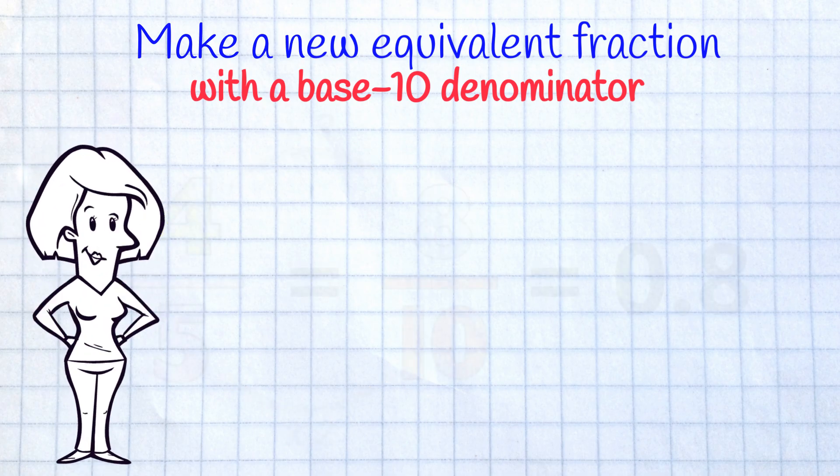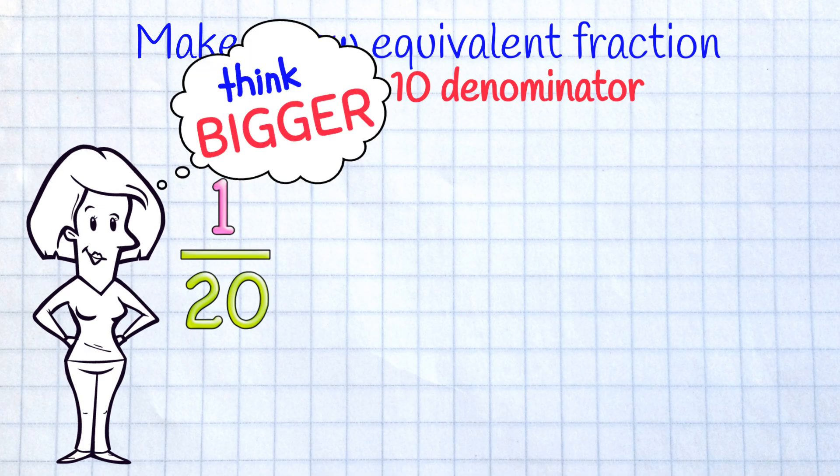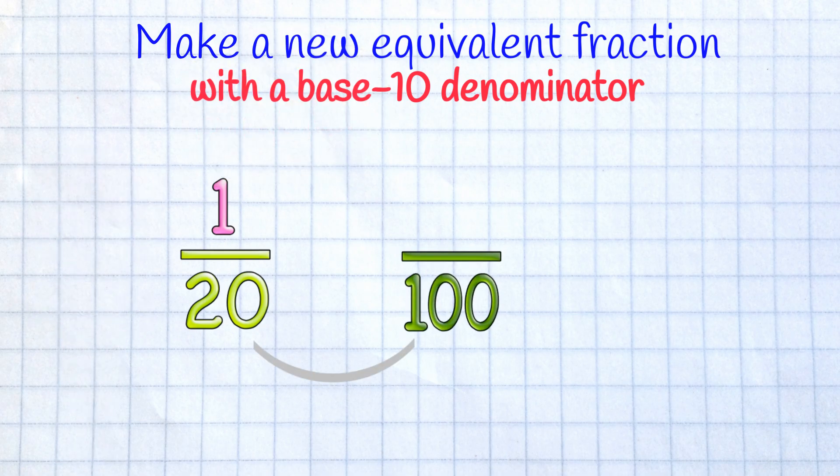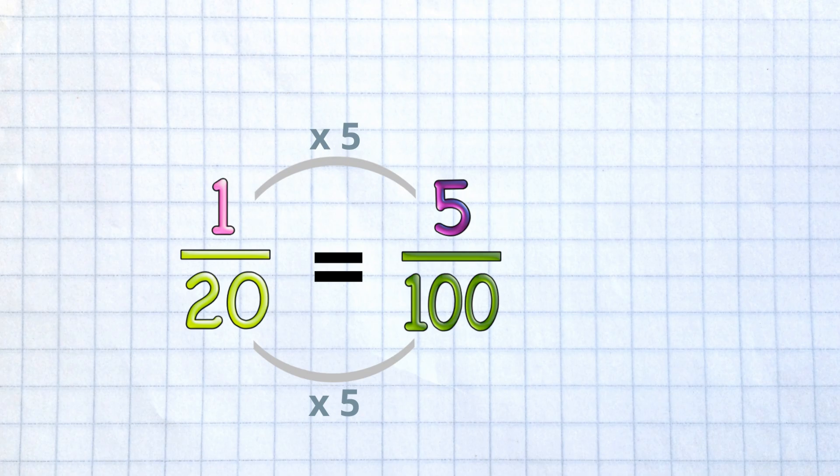Let's do another one. 1 twentieth. This time, we have to think bigger! Our denominator of 20 will turn into 100. To do that, we multiply by 5. Do the same to the numerator, and that gives us 5 hundredths. When you write your decimal,